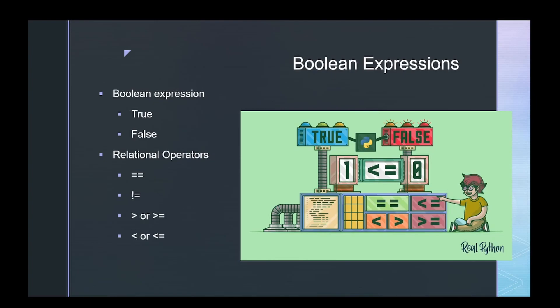In Python we can also use Boolean expressions. A Boolean expression is something that evaluates to either true or false — anytime we do a comparison and get that true or false answer. We use relational operators such as the double equal sign. Remember, a single equal sign is the assignment statement where you're giving a value to a variable, while two equal signs compares to see if they have an equal value. So does one equal one? True.